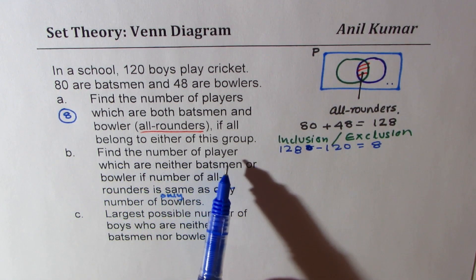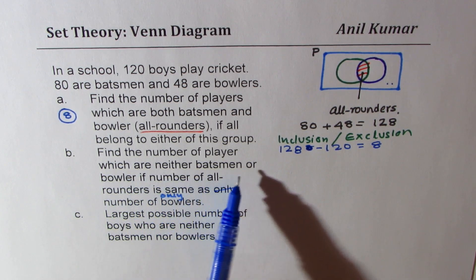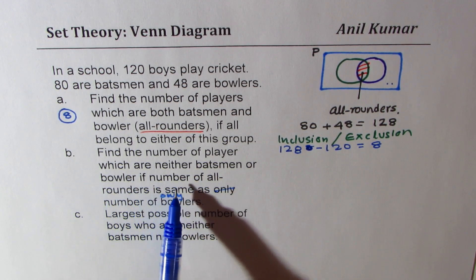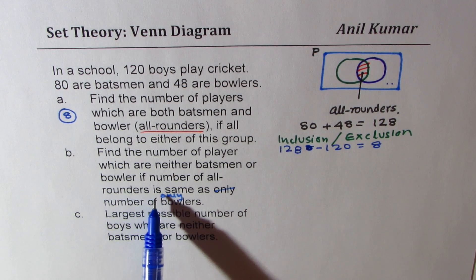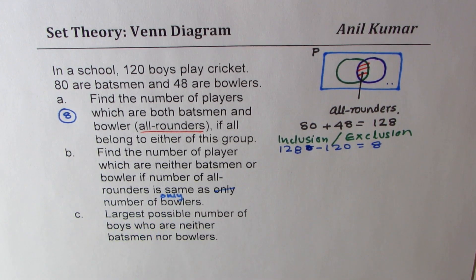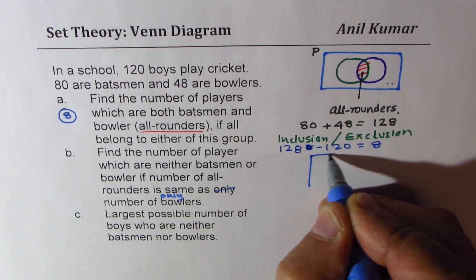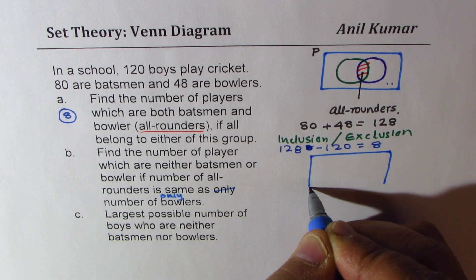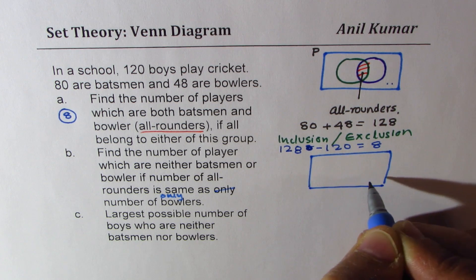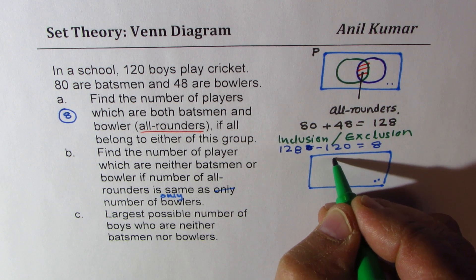Part B: find the number of players which are neither batsmen nor ballers if the number of all-rounders is the same as the number of only ballers. This question has been twisted a bit, which makes it very tricky. We want to find how many could be outside. Let me sketch it again and explain the concept.